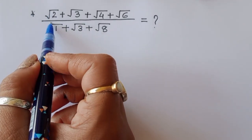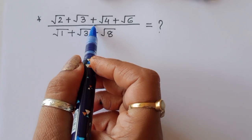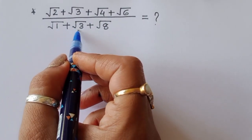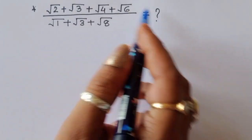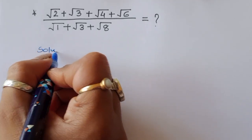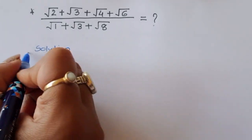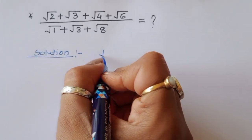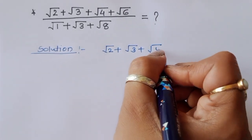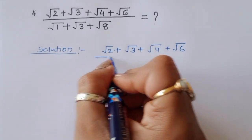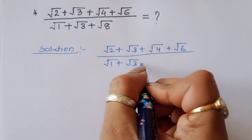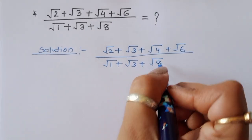The question is given: square root of 2 plus square root of 3 plus square root of 4 plus square root of 6, divided by square root of 1 plus square root of 3 plus square root of 8. We have to find out the value of this expression. Let's see the solution.